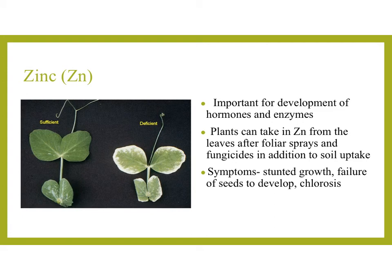Another trace element is zinc, which is very important for the development of hormones and enzymes. Plants can take in zinc from the leaves after a foliar spray and from fungicides in addition to soil uptake. Symptoms include stunted growth, failure of seeds to develop, or chlorosis — the yellowing of the leaves.